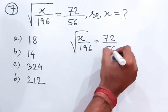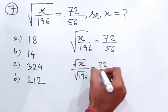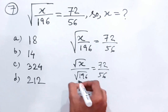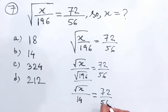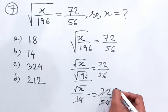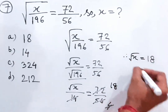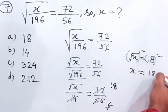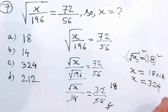Now, √x/196 = 72/56. So √x/√196 = 72/56, and since √196 = 14, we have √x/14 = 72/56. We can simplify 72/56 by dividing by 14 to get 18/4, so √x = 18. Squaring both sides gives x = 18² = 18 × 18 = 324. So C is the answer.